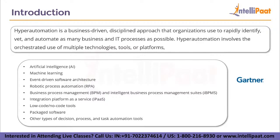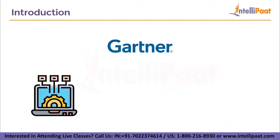These platforms include artificial intelligence, machine learning, event-driven software architecture, robotic process automation (RPA), business process management (BPM), integration platform as a service (iPaaS), low-code or no-code tools, packaged software, and other types of decision, process, and task automation tools. Using all of these platforms we can implement hyperautomation in any industry.